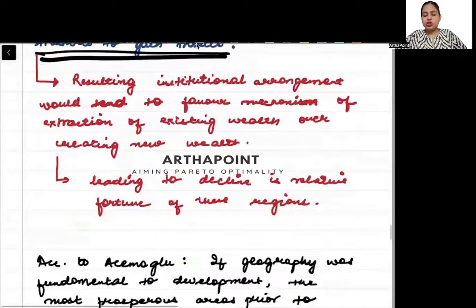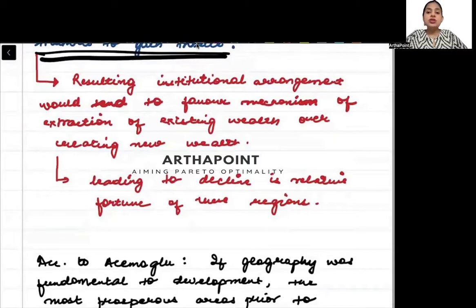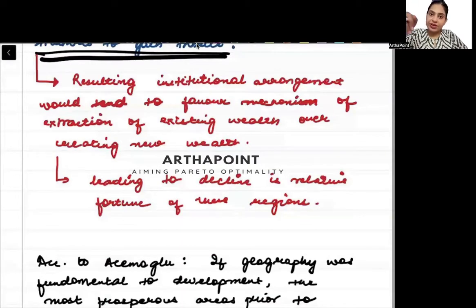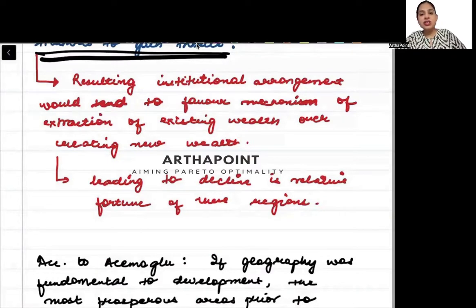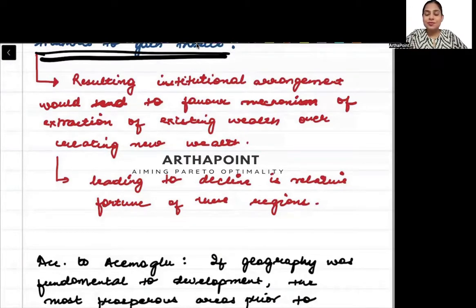Those institutes and systems that the Britishers established — like for example the zamindari system — those institutions favoured two kinds of people: the people who were already rich, and the Britishers themselves. So the resulting institutional arrangements favoured the existing wealthy people, and favoured extracting wealth from the people and keeping it in their own hands.